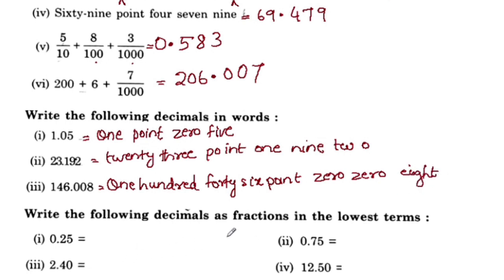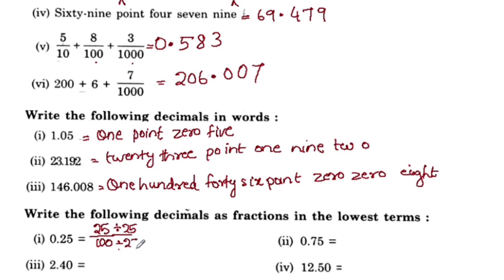Write the following decimals as fractions in the lowest term. 0.25: the decimal point has 2 digits, so this is 25 by 100. 25 is a factor of 100: 100 divided by 25 is 4, and 25 divided by 25 is 1. So 0.25 = 1 by 4.